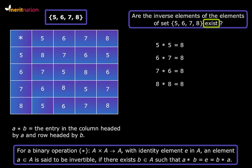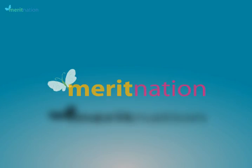So in this way if we are given a binary operation table we can easily find out the identity element and the inverses of the elements provided that they exist.